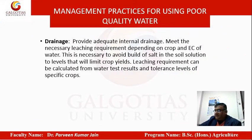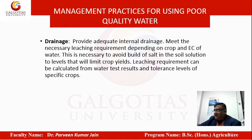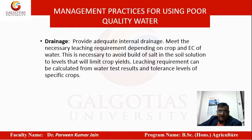Drainage is another management practice. Providing adequate internal drainage ensures there is no accumulation of water, which would create anaerobic environments and problems such as waterlogging. Meeting the necessary leaching requirements depending on crop and quality of water is necessary to avoid buildup of salts in soil solutions to levels that will limit crop yields. Leaching requirements can be calculated from water test results and tolerance levels.